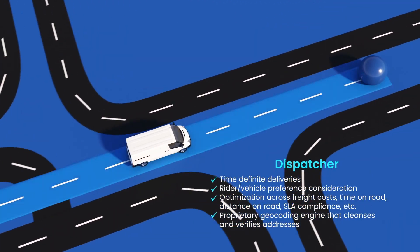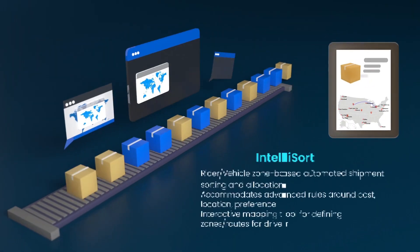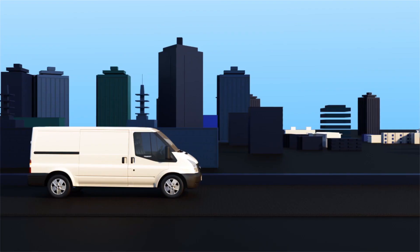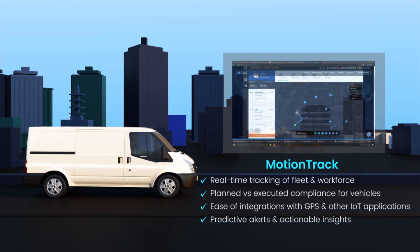LOCUS optimizes route planning with Dispatcher, automates shipment sorting through IntelliSort, and provides real-time predictive alerts, analytics, and insights via MotionTrack.